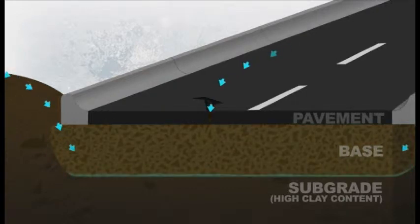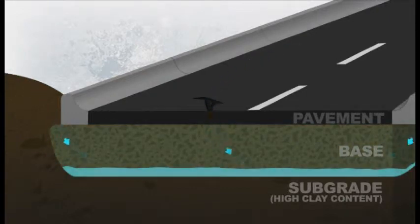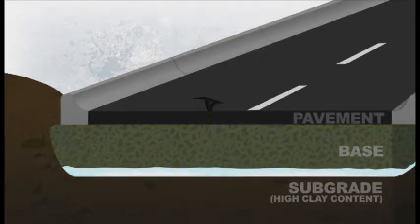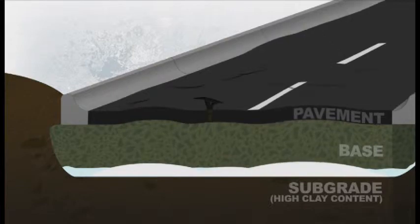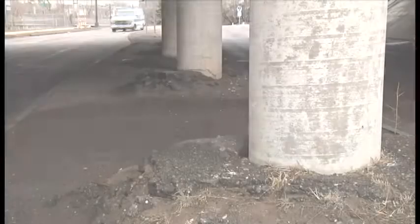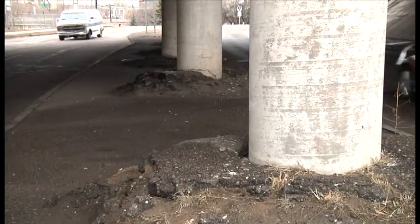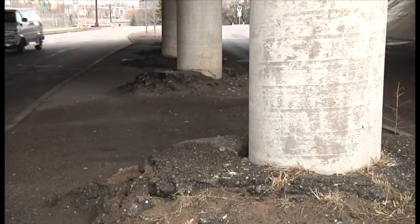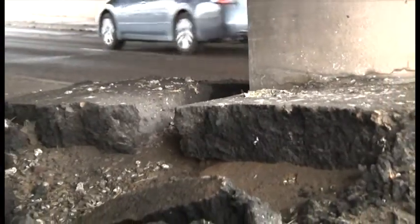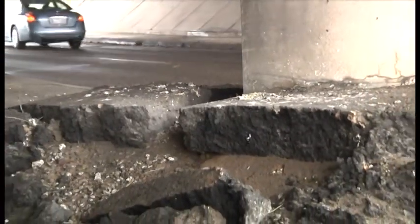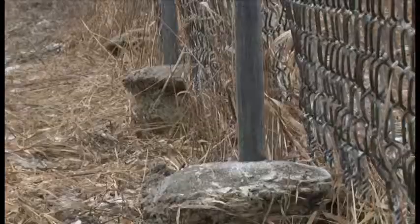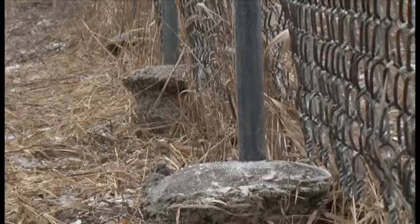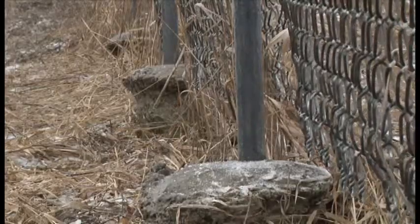Over time, the water accumulates, freezes, and heaves the pavement upward, causing damage. Frost action can also lift almost anything embedded in soil that's above the frost line, such as foundation pilings, utility poles, and fence posts.